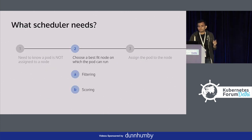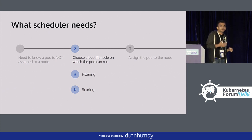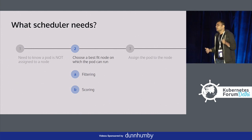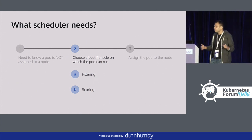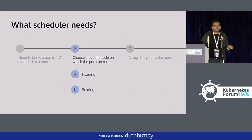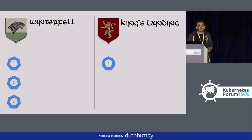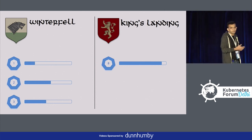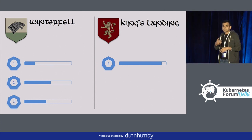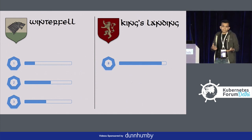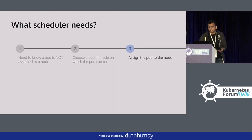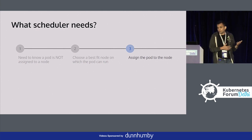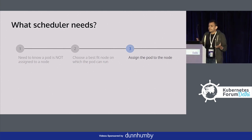The next part is scoring. All filtered nodes can match the criteria and the pod can be scheduled on any one of them, but we have to shortlist one particular node. The scheduler looks at a bunch of scoring functions. Node one may be the least scored and node eight the highest scored, so the pod will be scheduled on node eight.